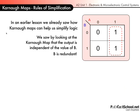We saw by looking at the Karnaugh Map that the output is independent of B and B is redundant.